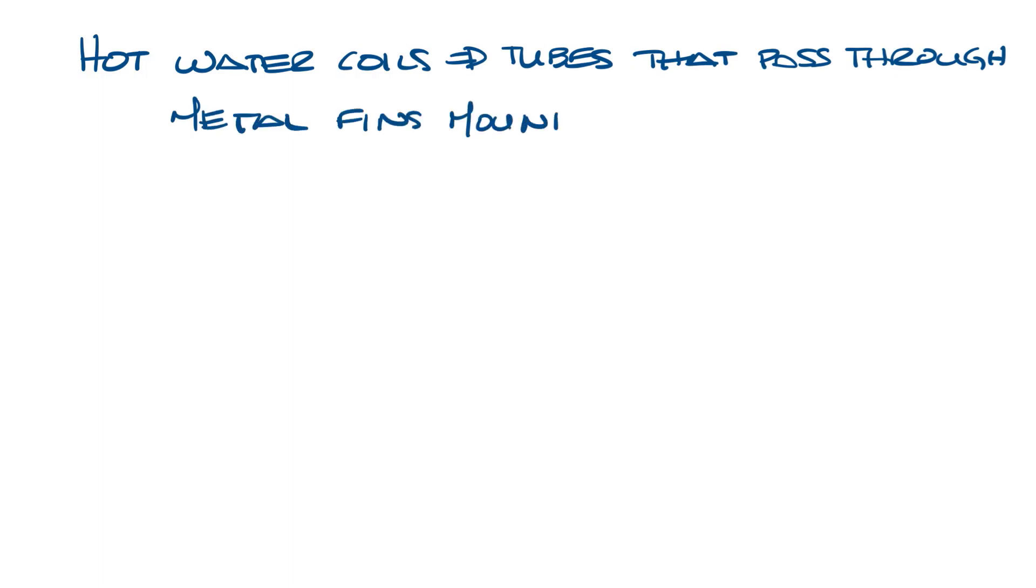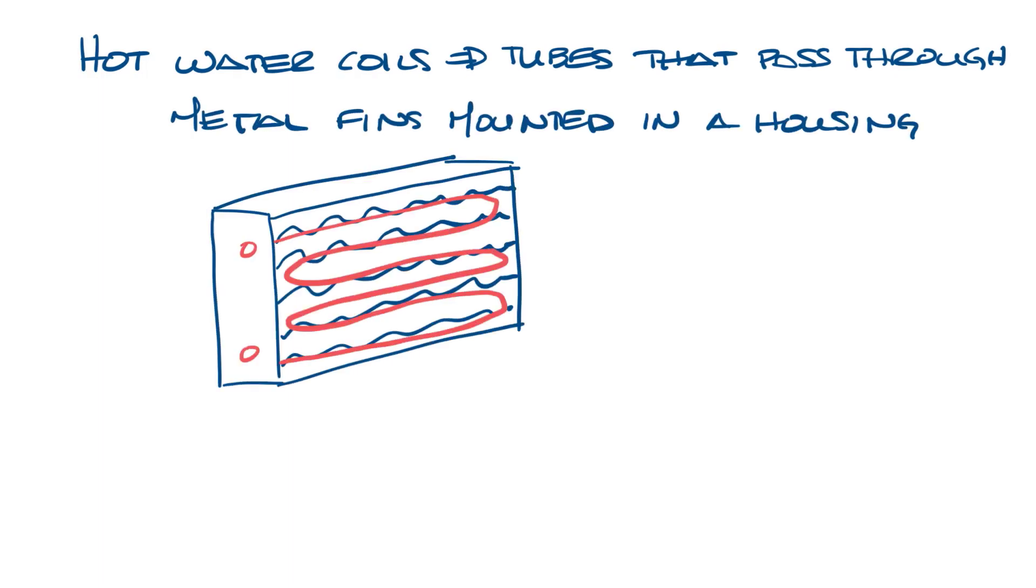I did a water coil basics video last year where I discussed construction and parts of water coils, but as a refresher, hot water coils consist of tubes that pass through metal fins mounted in a housing. When the hot water flows through the tubes, they transfer heat to the fins, and as the supply air passes through the coil, the fins transfer the heat to the air.